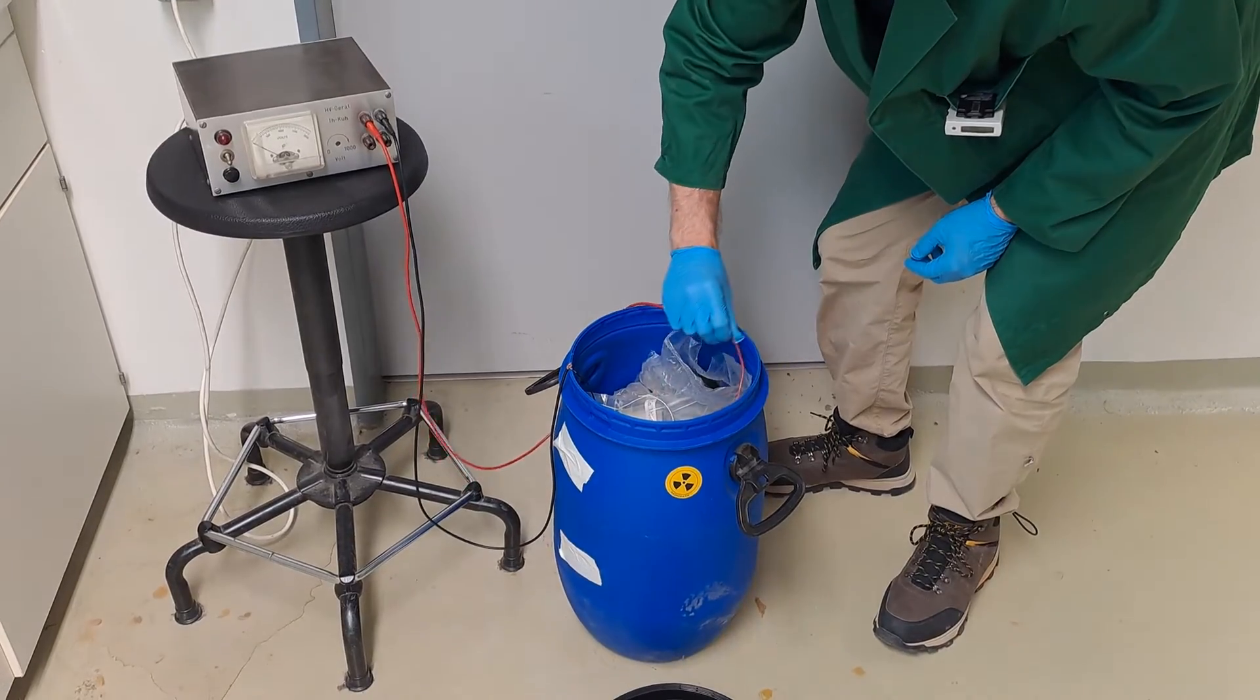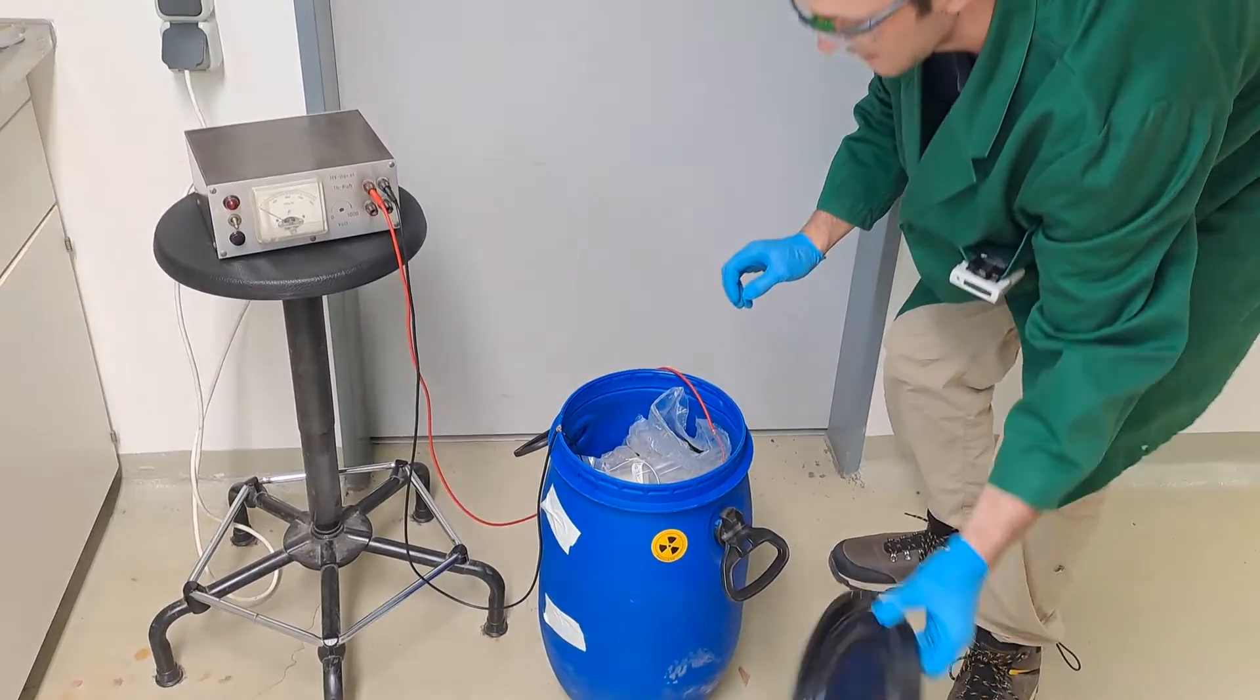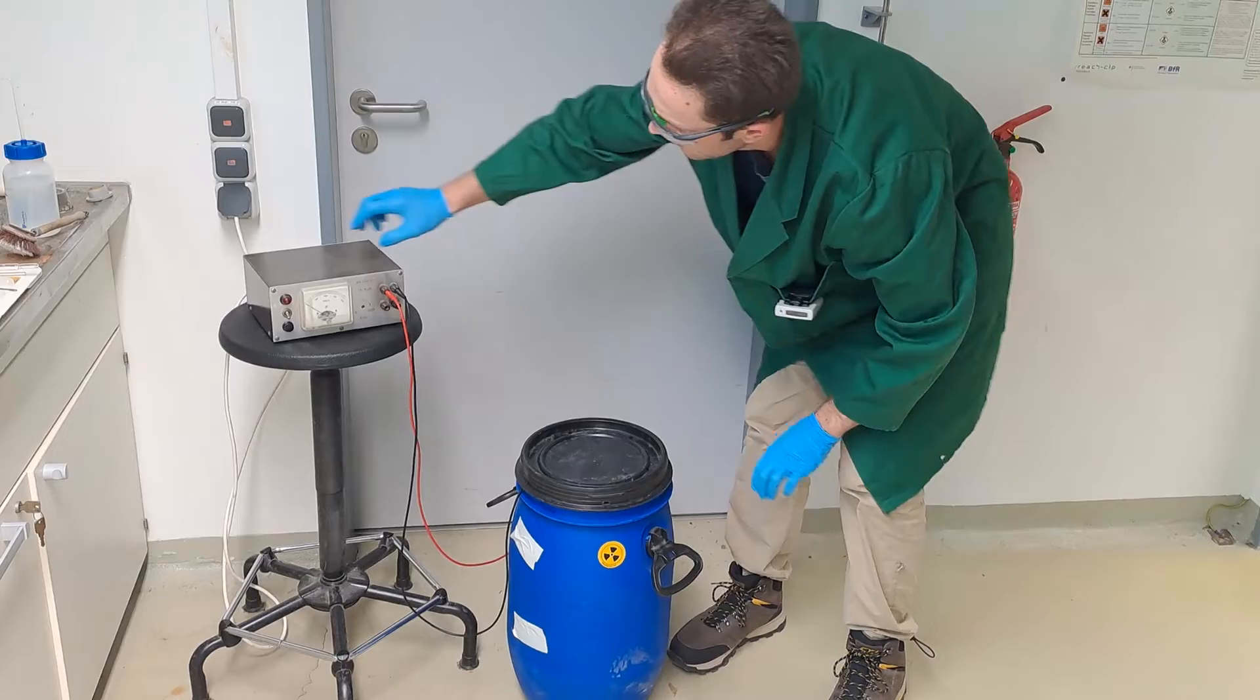Now place the connected coin inside the barrel alongside the positive pole and of course, make sure that the cables don't touch.